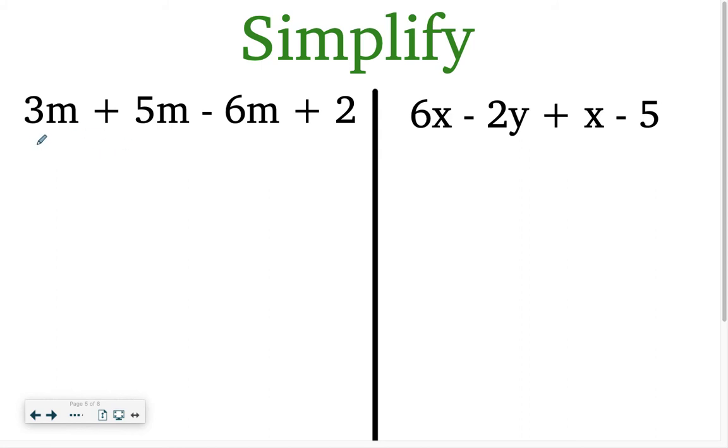Now let's practice simplifying. So I have 3m plus 5m minus 6m plus 2. So I need to look and see what ones have the same variable. So I see an m here, here, and here. None of them are squared or cubed. They're all just a regular m. So what I'm going to do is I'm going to add the numbers in front of them. So 3 plus 5 is 8. 8 minus 6 is 2m. And then don't forget to bring down that constant. So that would be my simplest form.